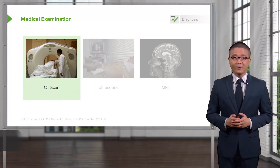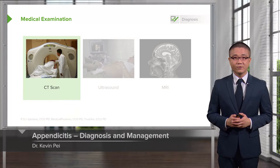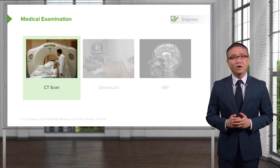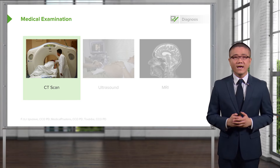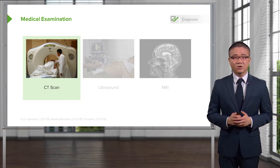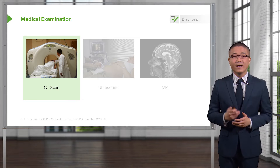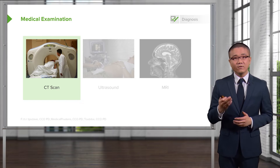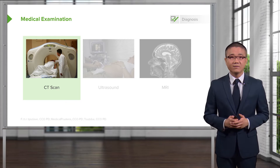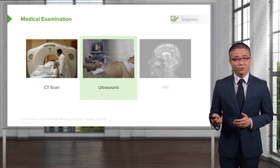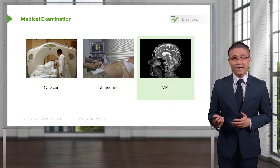What imaging modality would you like to pursue for further diagnosis of appendicitis or right lower quadrant abdominal pain? If the findings are classic, both historically and on physical exam, there's no need for further imaging studies. However, if you need to get an imaging study, we have a lot of modalities available: CT scans, ultrasound, and MRI.